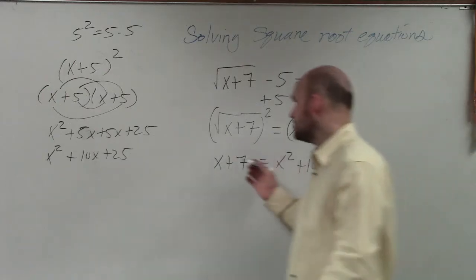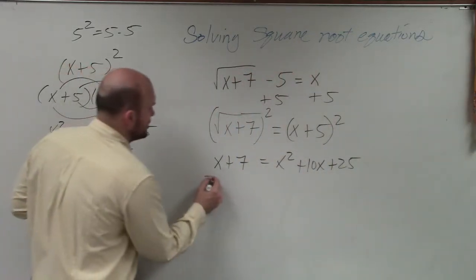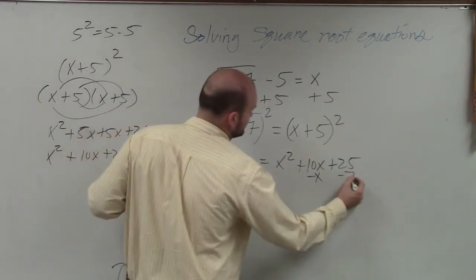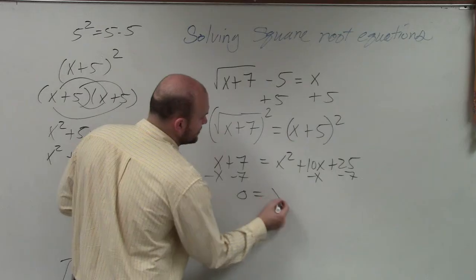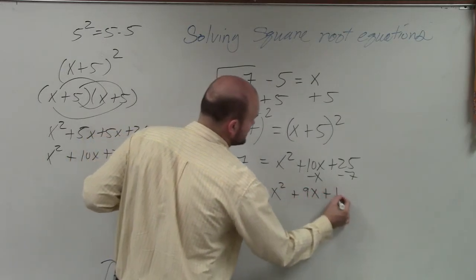What we're going to have to do is use factoring. So I need to, to do factoring, though, we have to set it equal to 0. So I subtract an x and I subtract a 7. I have 0 equals x squared plus 9x plus 18.